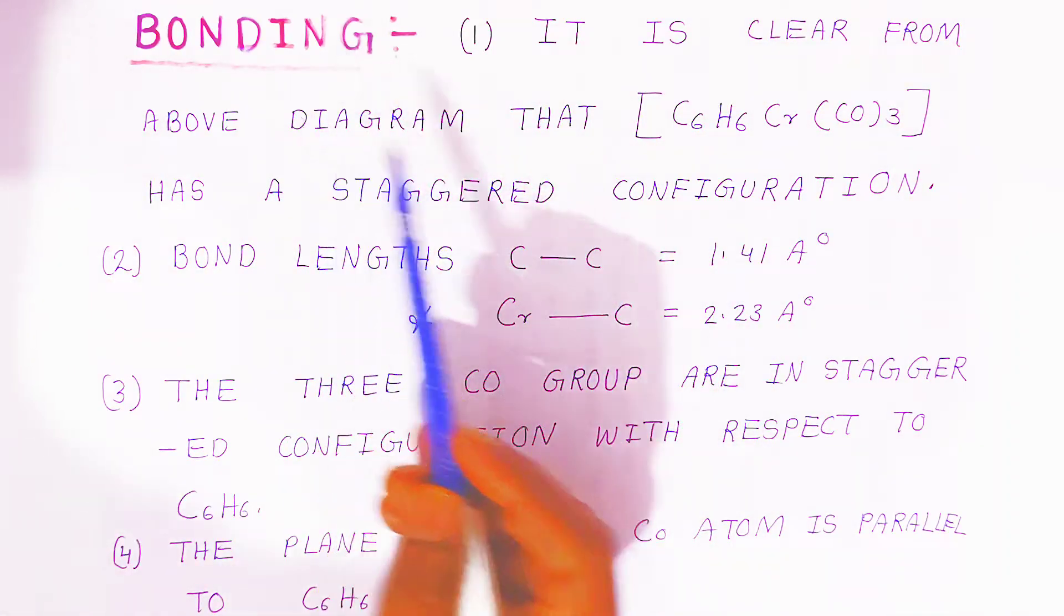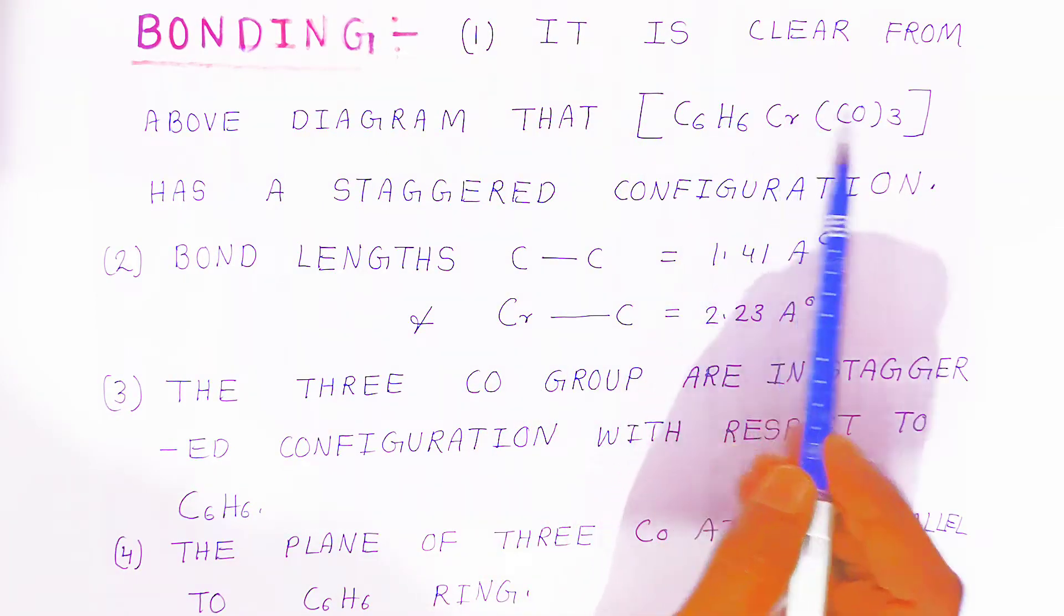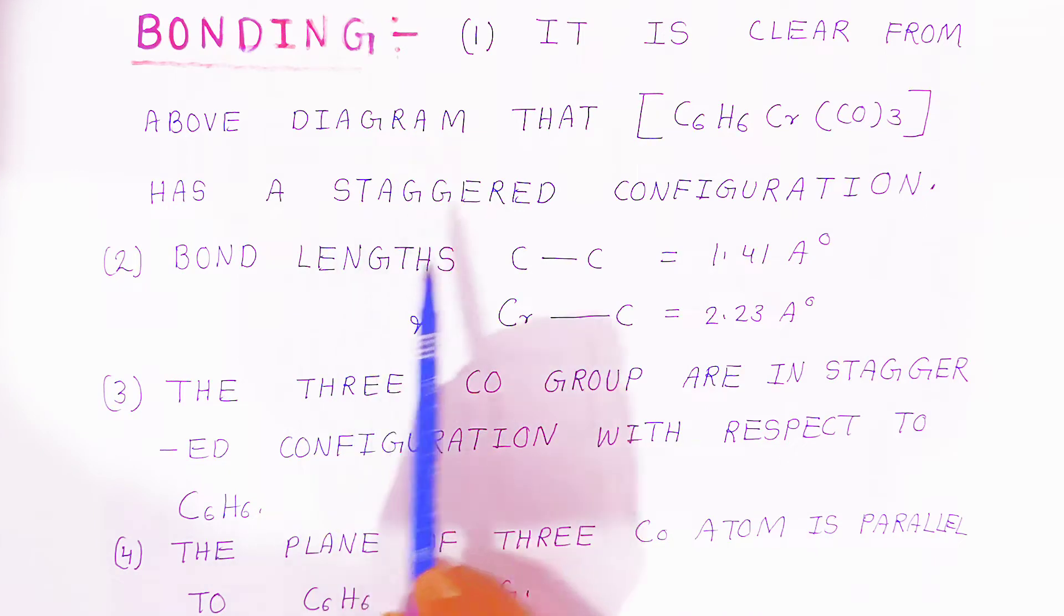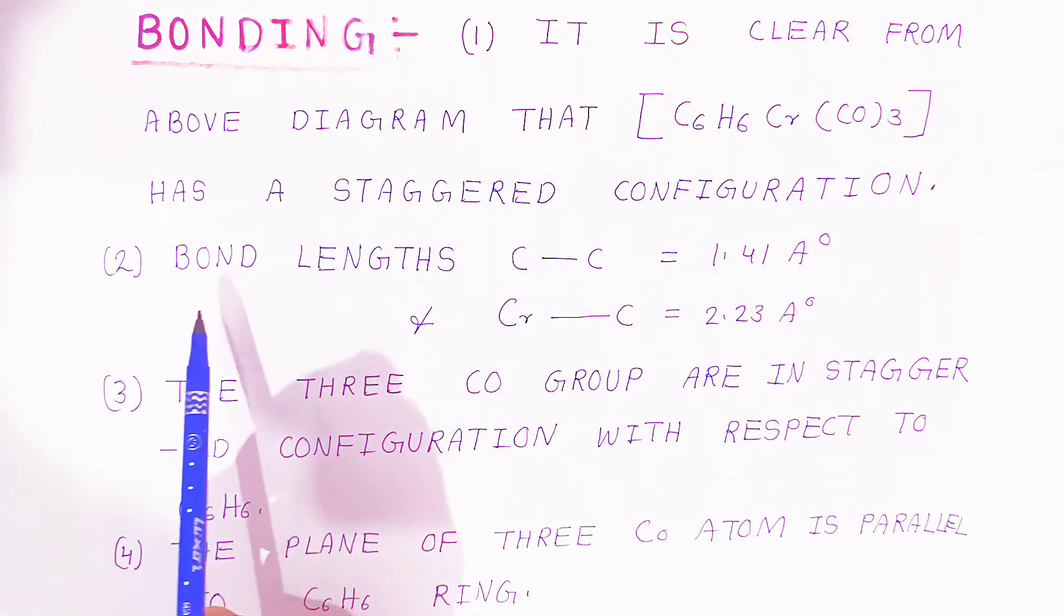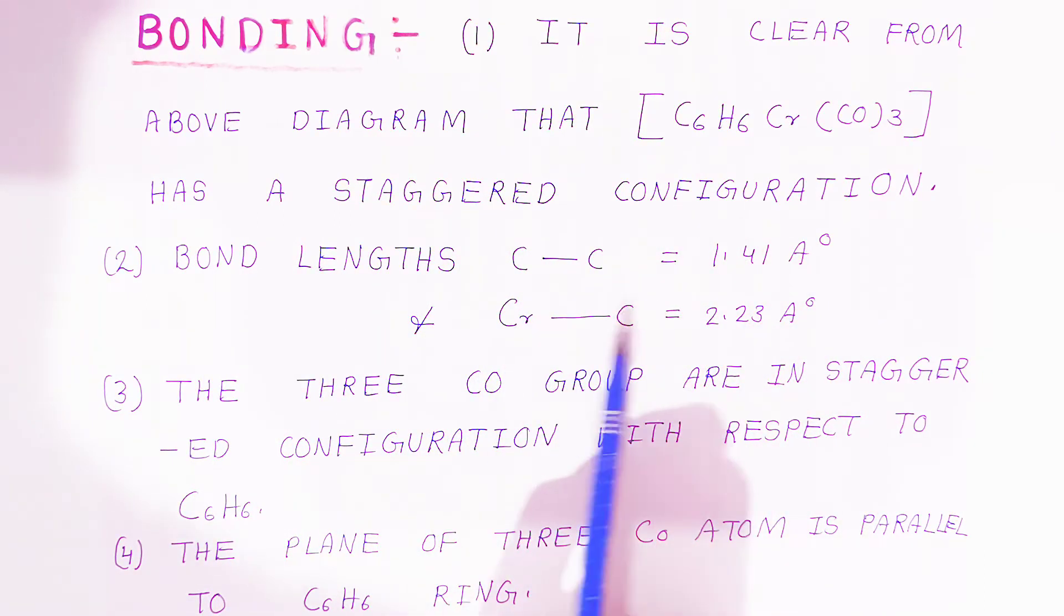Now when you are talking about bonding, it is clear from the above diagram that benzene-chromium-tricarbonyl has a staggered configuration. When you are talking about bond lengths, carbon-carbon bond is 1.41 angstrom, but here the chromium-carbon bond is quite bigger, that is 2.23 angstrom.